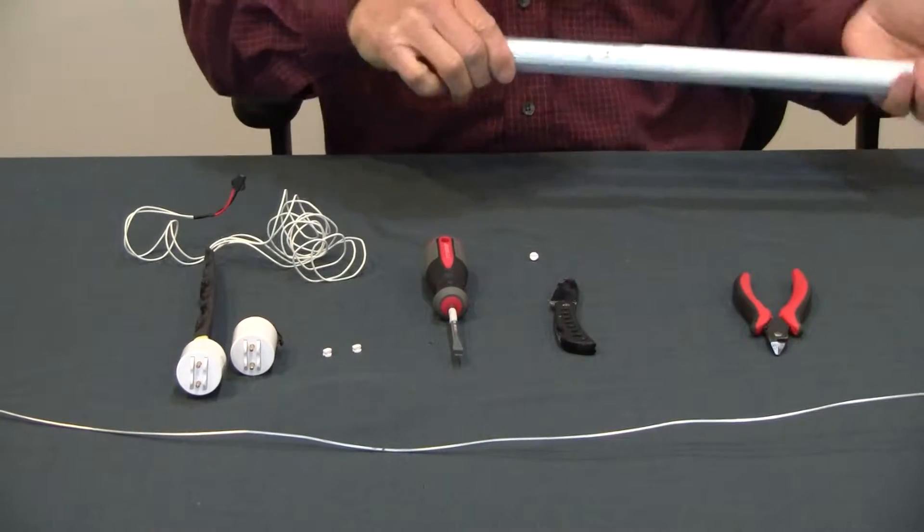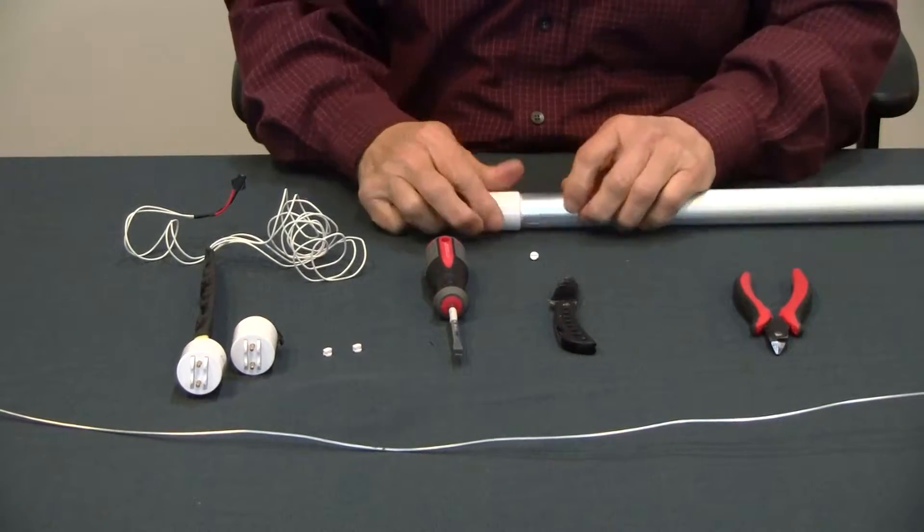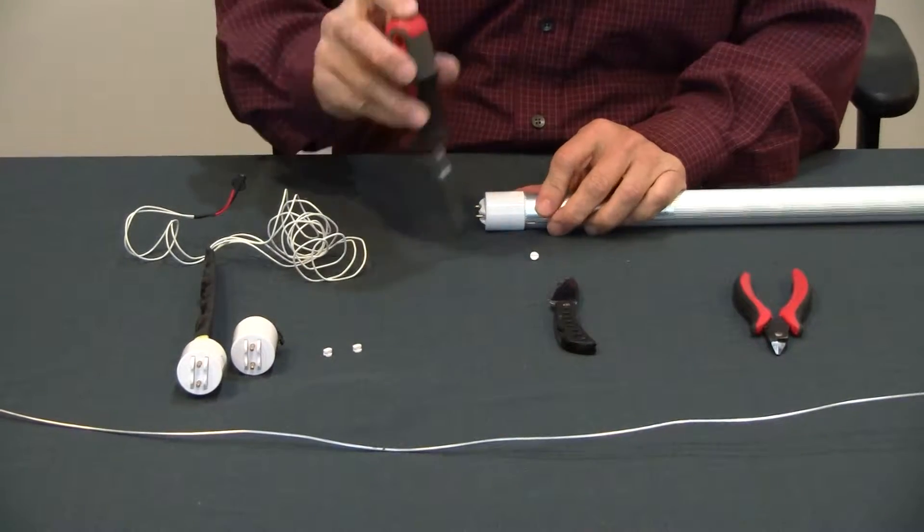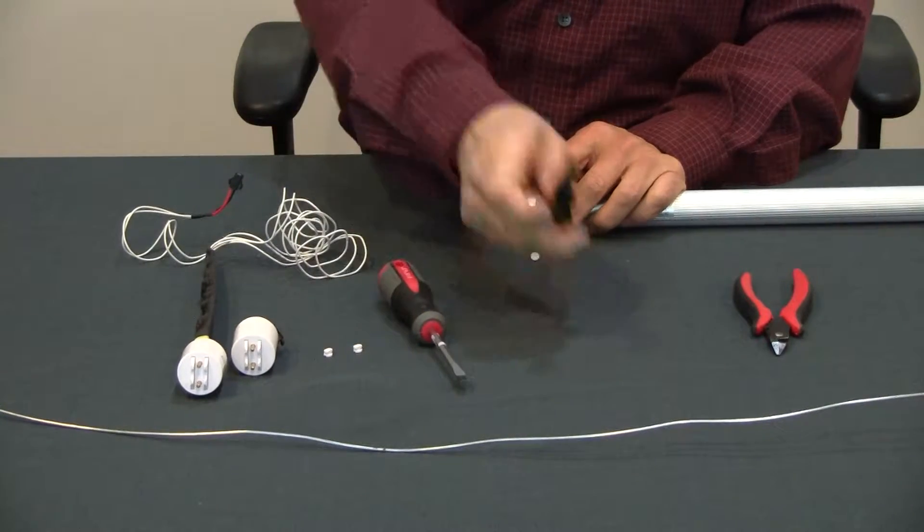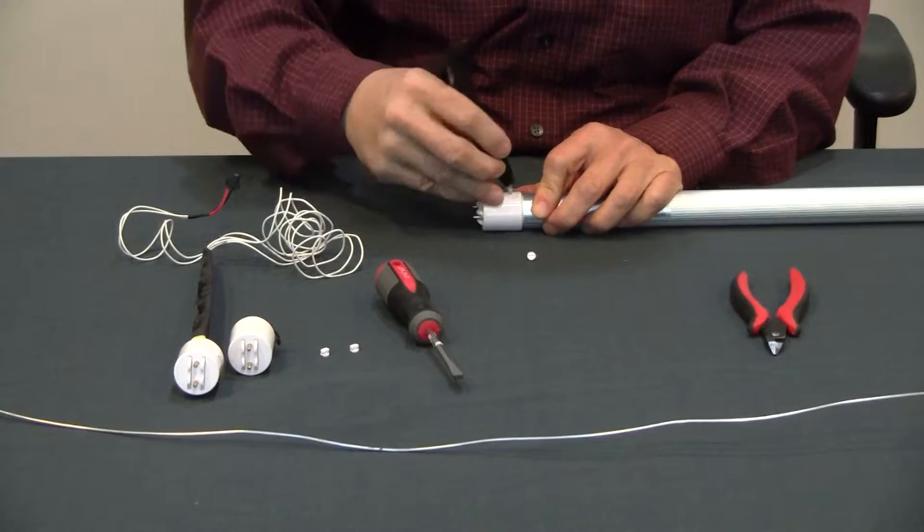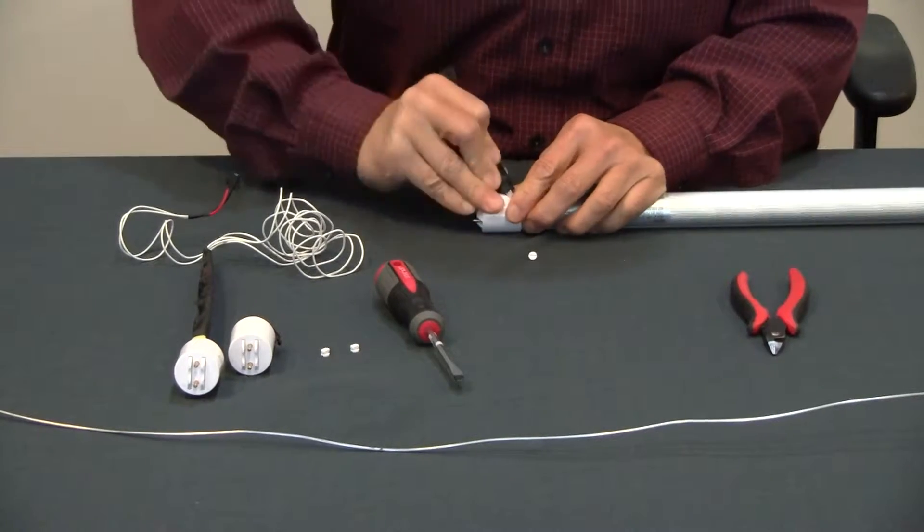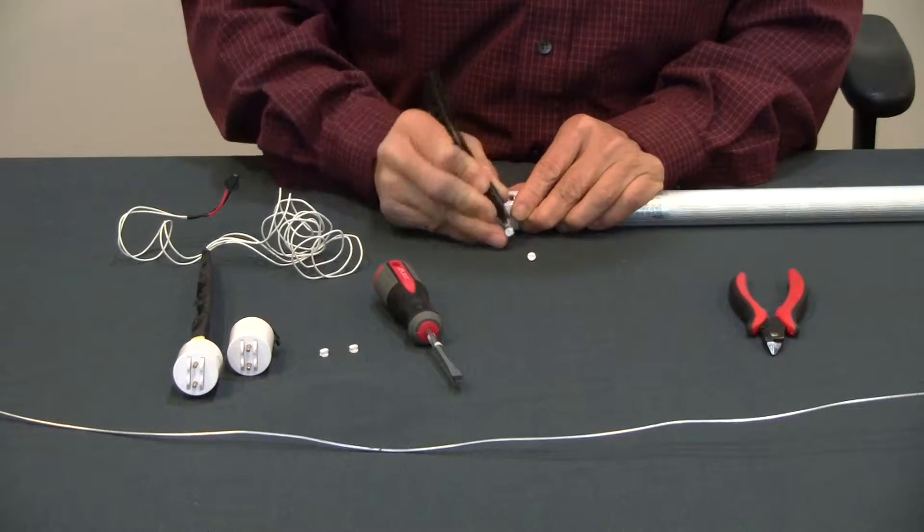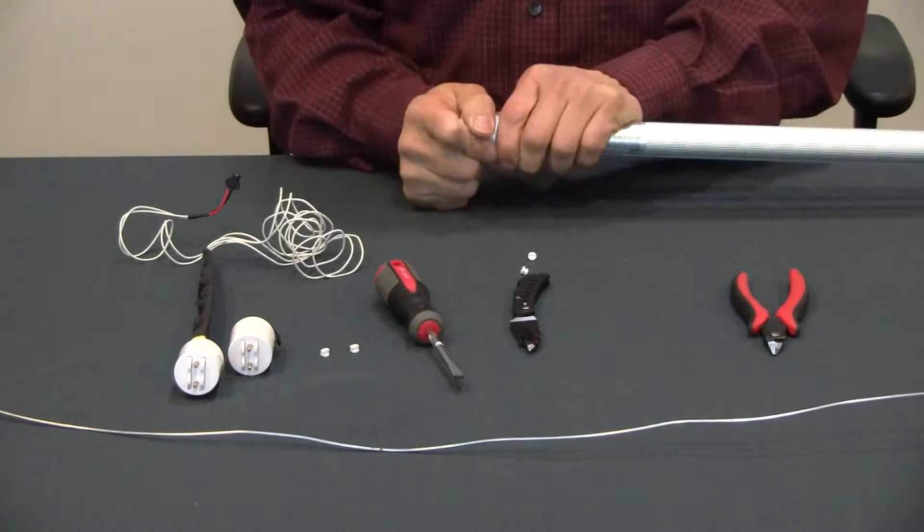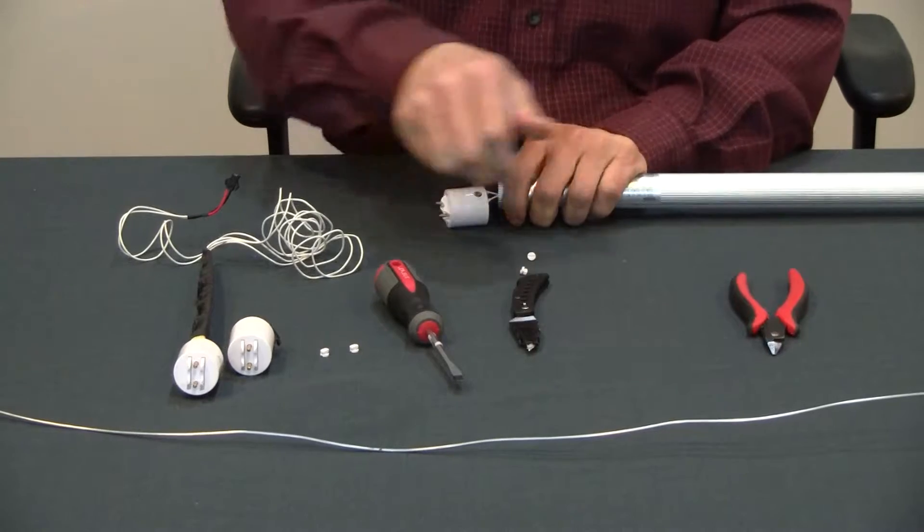Flip to the other end. Again use the screwdriver to rotate the groove of the tab perpendicular to the LED tube. Then use sharp knife to remove the tab. Once the tab is removed, you can now loosen the end cap.